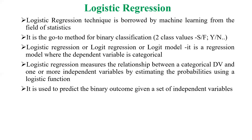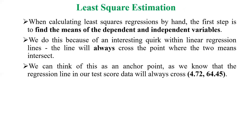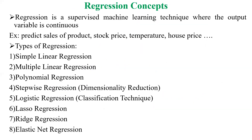Coming to the first part, regression is a supervised machine learning technique where the output variable is continuous. In data science or machine learning, we have seen different kinds of data types — qualitative and quantitative. Regression gives a measure, meaning some continuous value — not a categorical thing. Prediction of sales of a product, stock price, temperature, or house price all belong to the implementation of regression.